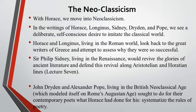Finally, in our 8th lecture, we will move to England and look at John Dryden and Alexander Pope. They lived in the British neoclassical age, which actually modeled itself on Rome. Dryden and Pope sought to do for their contemporary poets what Horace had done for his — that is, systematize the rules of poetry. This unit is the most spread out chronologically, spanning about 1800 years, but they all fit under this rubric.